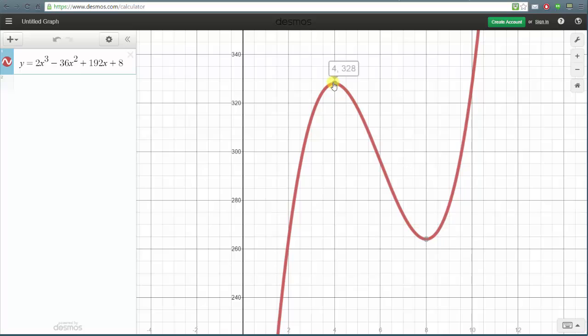And if we scroll over the high point, we have a local maximum at x equals 4. The local maximum value or function value is the y coordinate of 328.